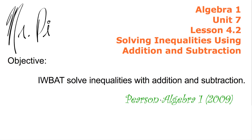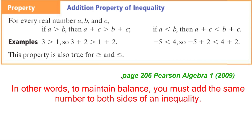I work out of the Pearson Algebra 1 Copyright 2009 textbook. Here we have a property of algebra: the Addition Property of Inequality. It reads: for every real number a, b, and c, if a is greater than b, then a plus c is going to be greater than b plus c. For example, we know 3 is greater than 1, so 3 plus 2 is greater than 1 plus 2, giving us 5 greater than 3.